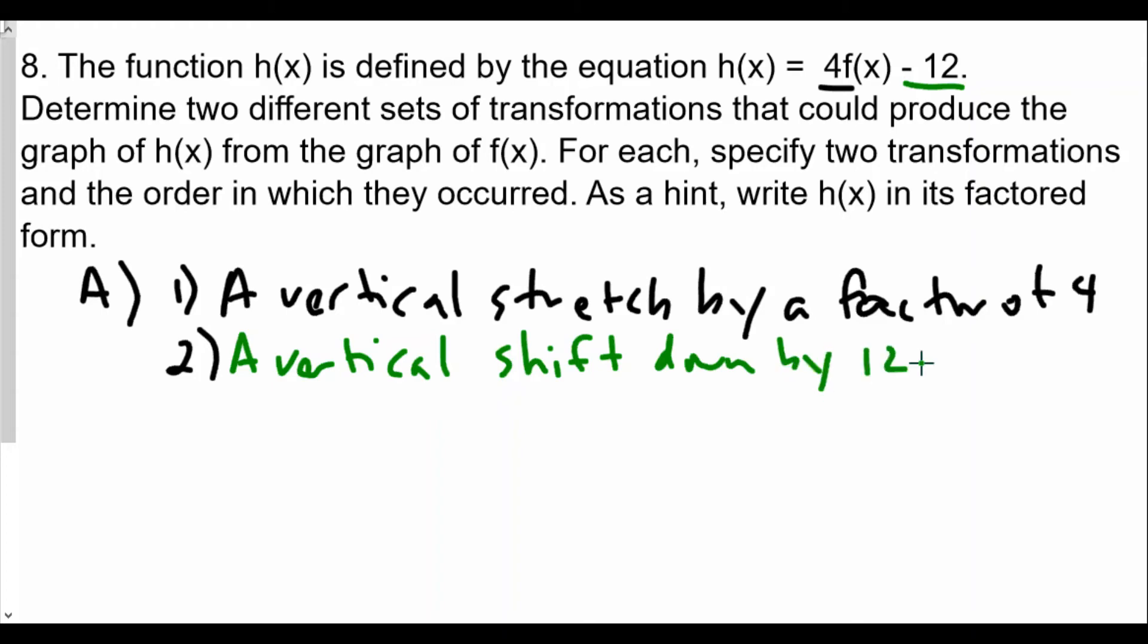Now the hint for the second one: as a hint, write h of x in its factored form. Well h of x in factored form would be four bracket f of x minus three, because of the fact that we have here a greatest common factor of four. So if we use that,